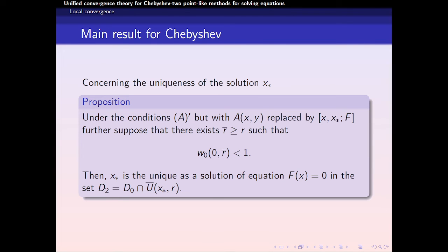And concerning the uniqueness of the solution x*, we have this proposition. Under the condition A1' but replacing A by this divided difference, further suppose that there exists R̄ > R such that this equation is completely solved, then x* is the unique solution of the equation in the set D₀ intersection the closed ball U with center in x* and radius R̄.